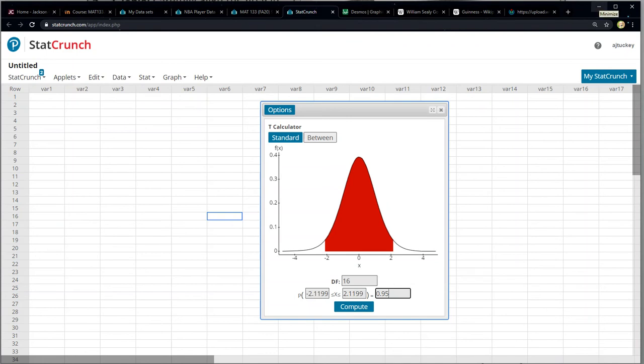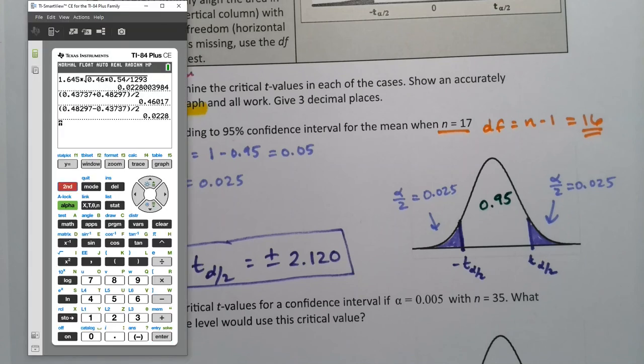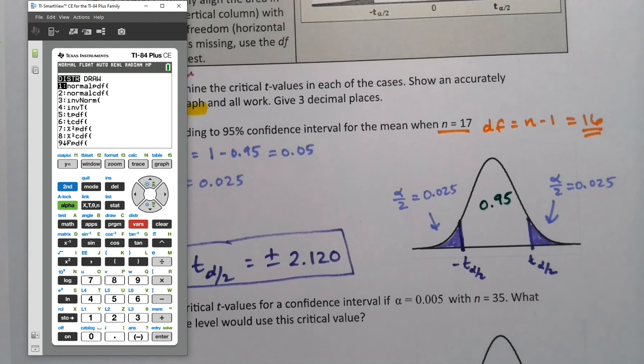So that's StatCrunch. Let me show you the calculator. The calculator is a little bit more finicky. So if I grab the calculator, I would choose inverse T.